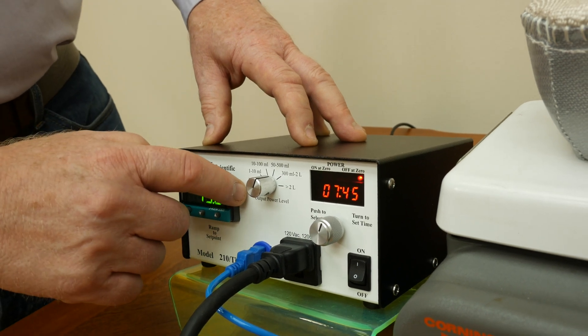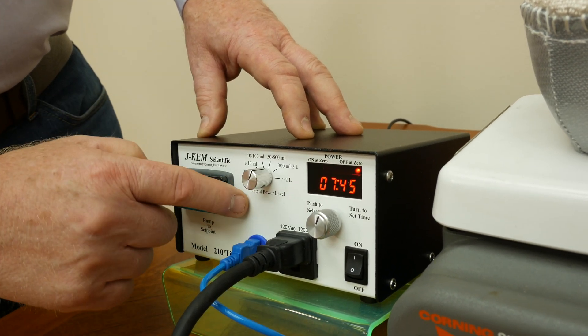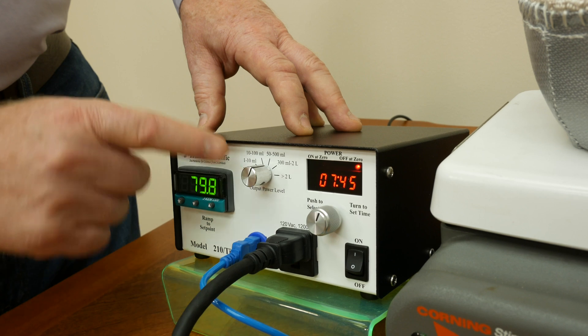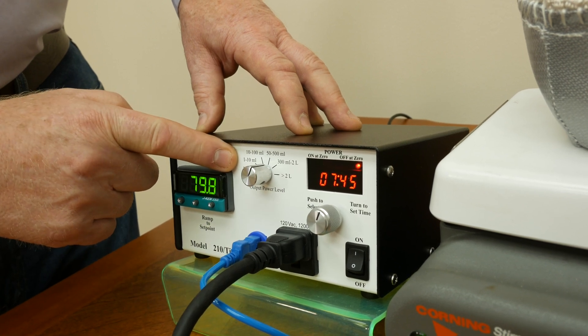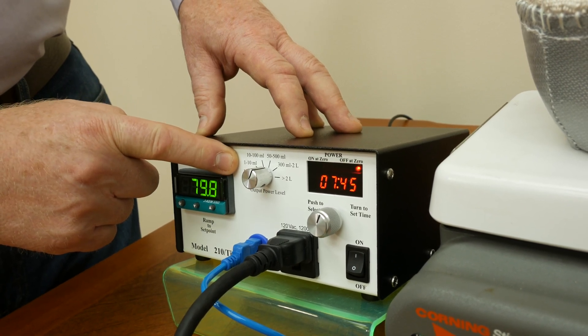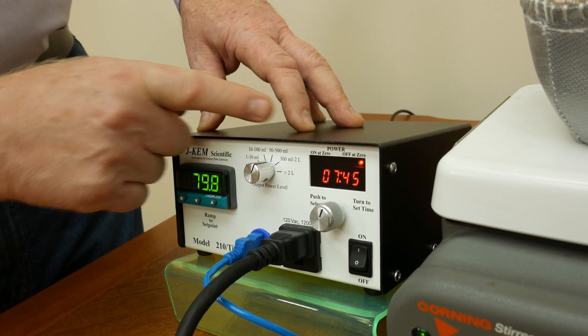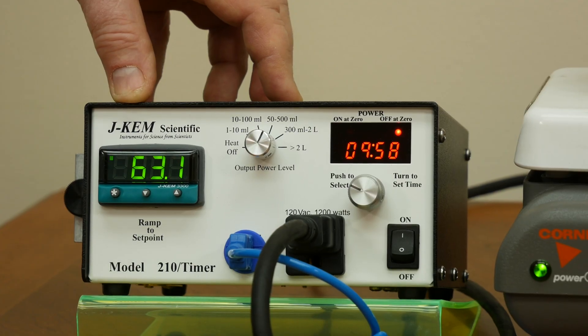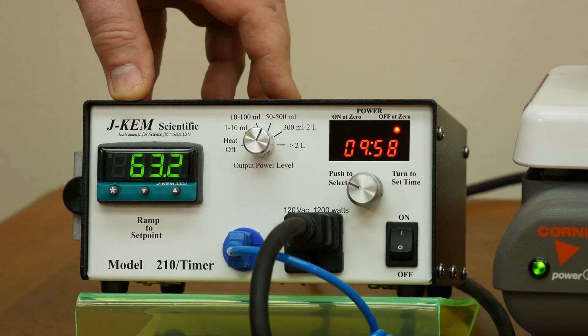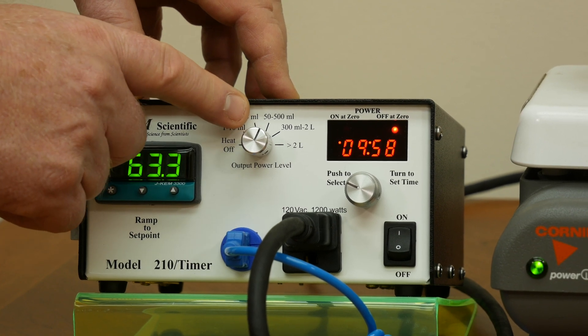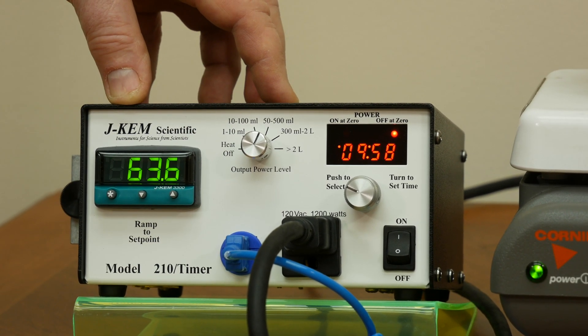The power control computer, you'll notice that it has various volume ranges on here and so the power that's being sent out to that heater depends on the volume that you're heating. It's simple. I know that's about 180 milliliters and so I'm going to set it to the power level which is 50 to 500 milliliters.